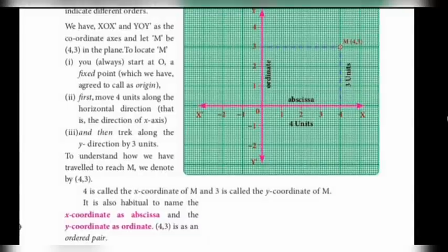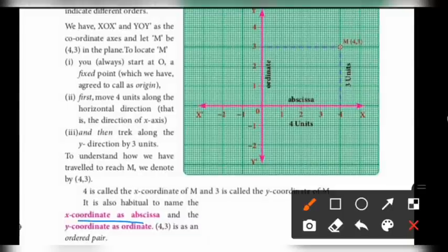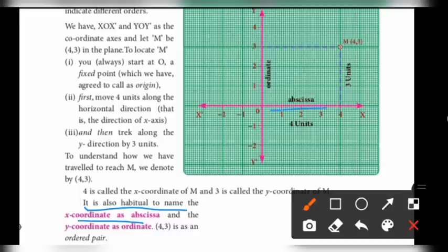It is habitual to name the x-coordinate as Abscissa. The x-coordinate is called the Abscissa, and the y-coordinate is called the Ordinate.